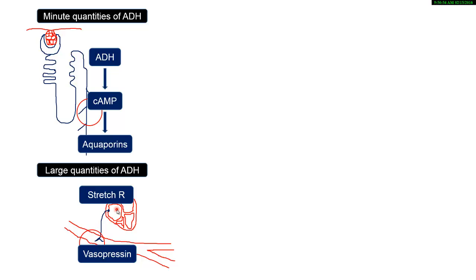The stretch receptors in the right atrium are stimulated when blood volume is normal or high, because the atrium stretches. When stimulated, these stretch receptors inhibit the synthesis and production of ADH by the hypothalamus. So when blood volume is normal or high, there is no production or effect of ADH.